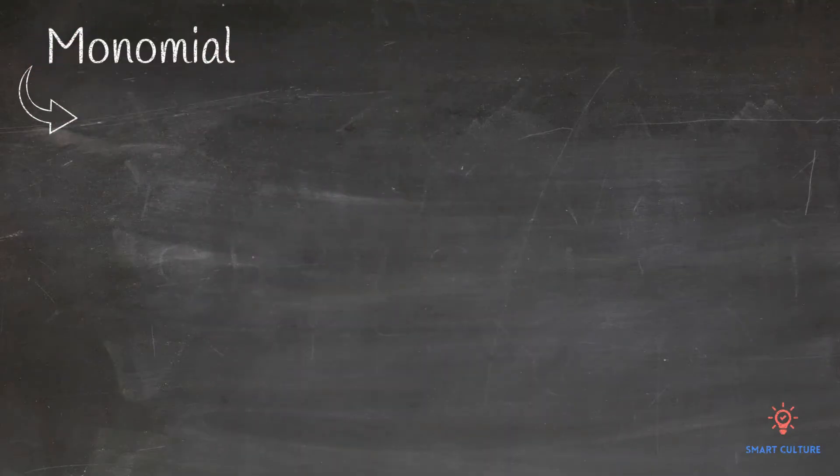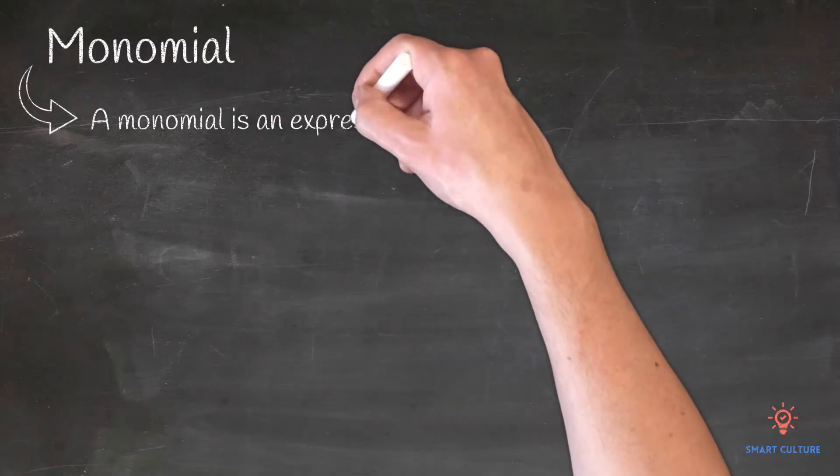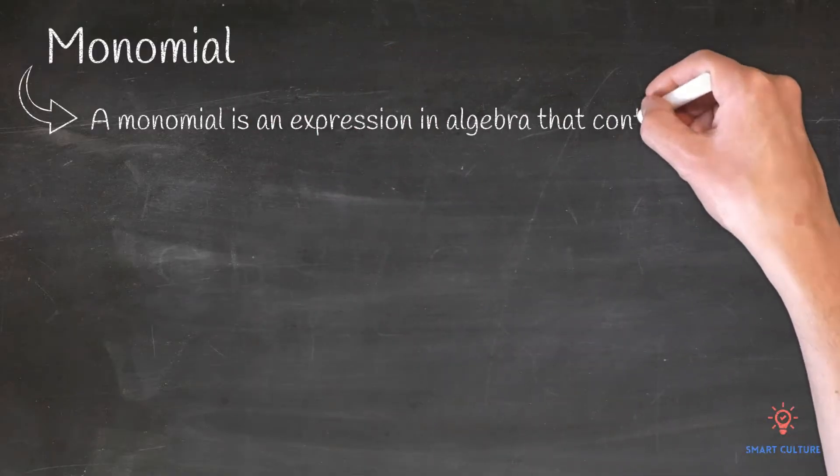What is a monomial? A monomial is an expression in algebra that contains one term.